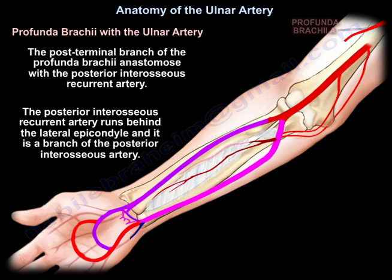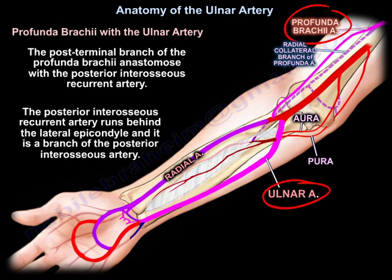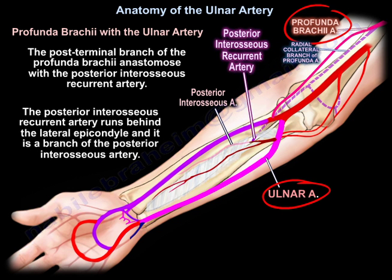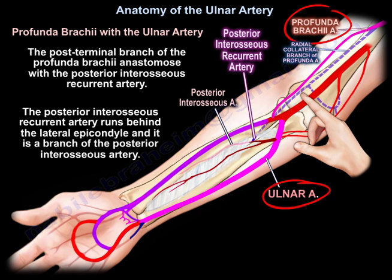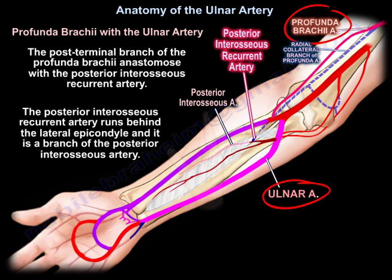The profunda brachii anastomoses with the ulnar artery. The posterior terminal branch of the profunda brachii anastomoses with the posterior interosseous recurrent artery, which runs behind the lateral epicondyle and is a branch of the posterior interosseous artery.